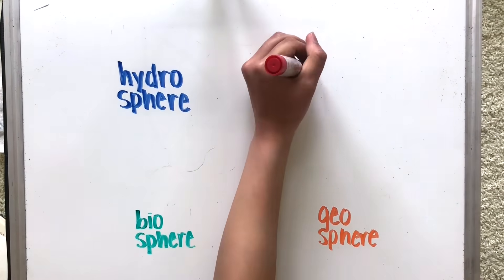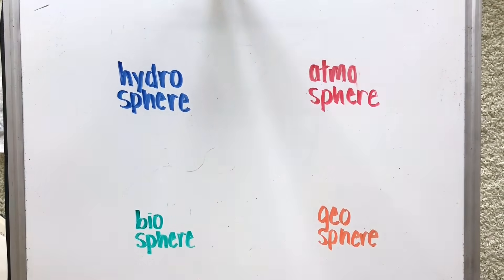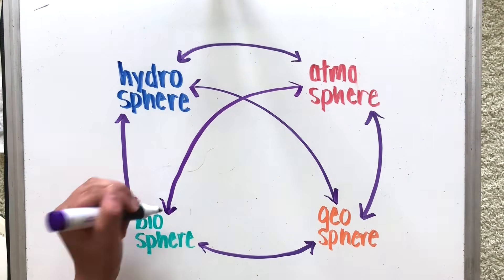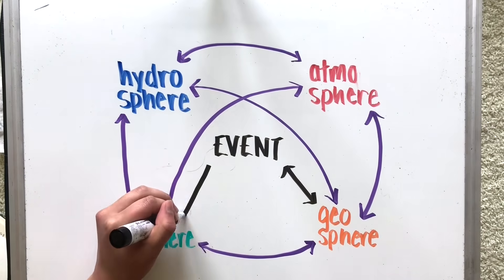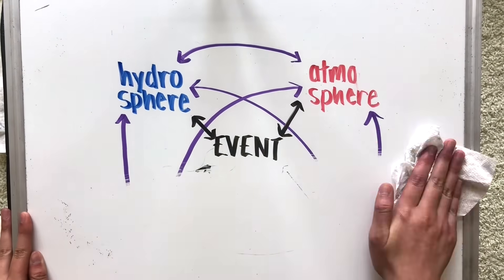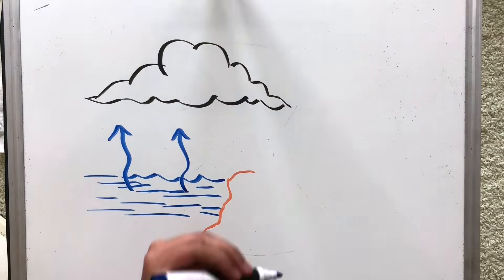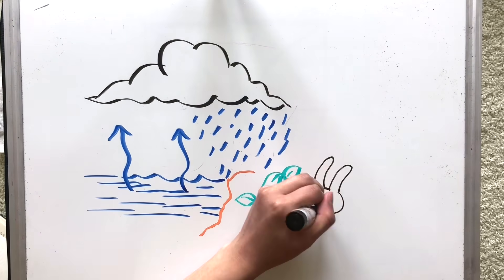All of Earth's systems are connected and work together in so many ways. From our geosphere, hydrosphere, and atmosphere working together to support life in our biosphere, to our hydrosphere interacting with our geosphere and atmosphere to shape our climate, everything works together.